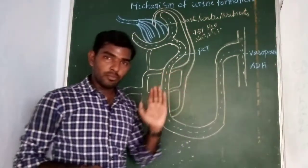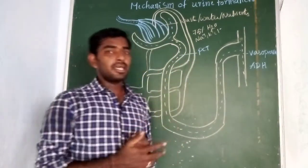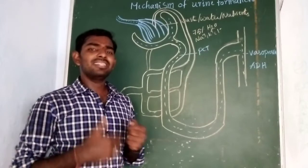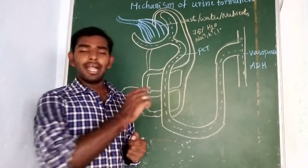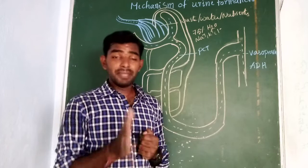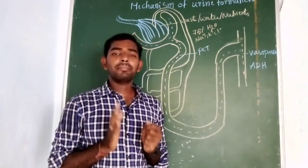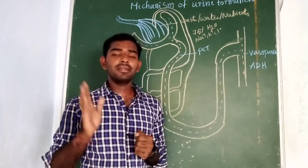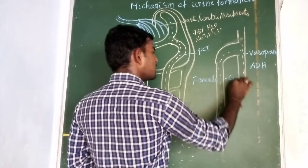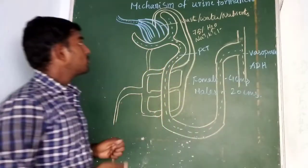After urine formation, it goes to the ureters — a pair of ureters which are cream-colored and 30 centimeters in length — finally connecting with the urinary bladder, which is pear-shaped and collects nearly 300 to 800 ml of urine. Finally it goes to the urethra: the size of the urethra in males is 20 centimeters and in females is 4 centimeters. In males, the urethra is a common pathway for the reproductive tract and urogenital tract.